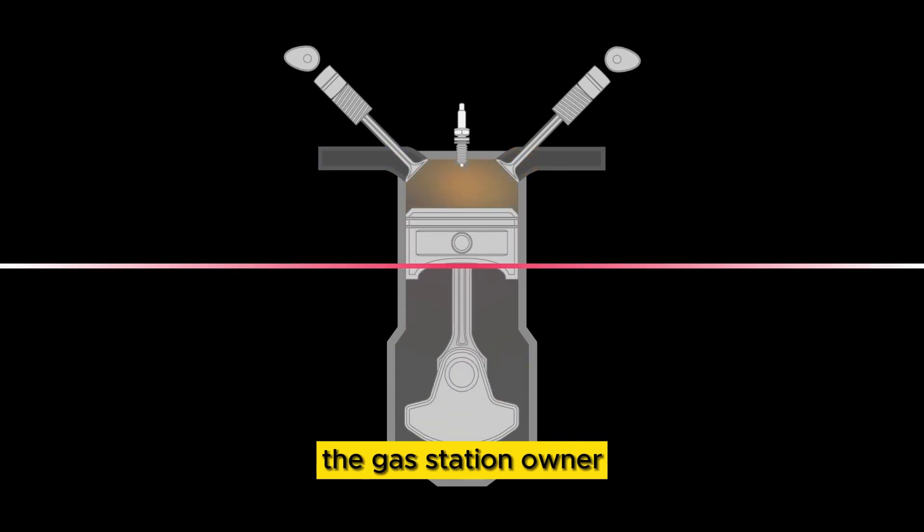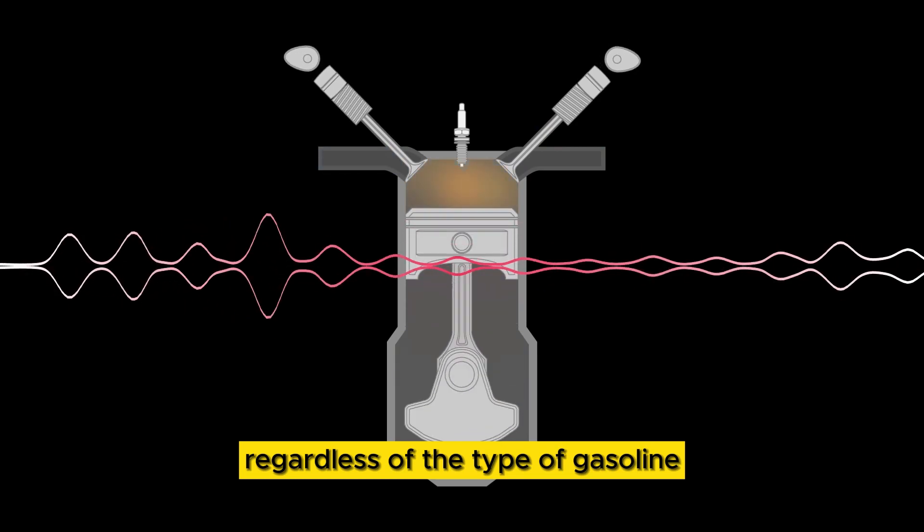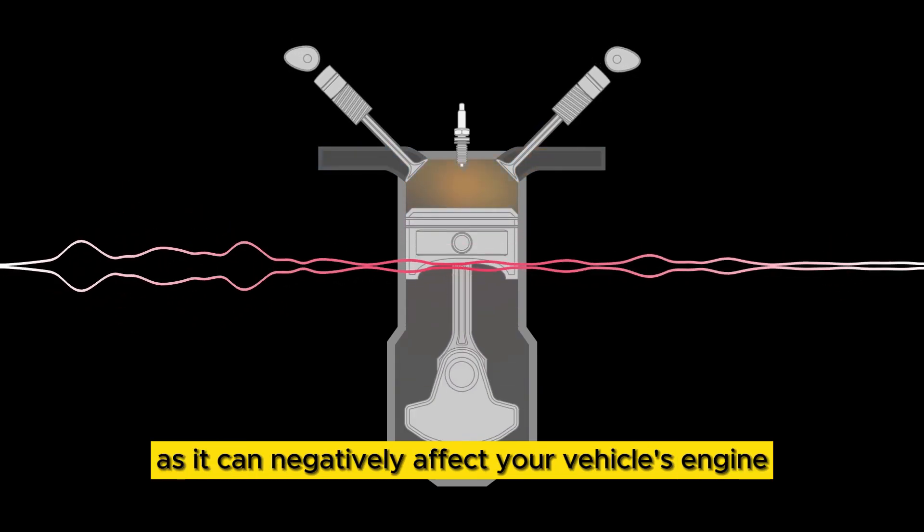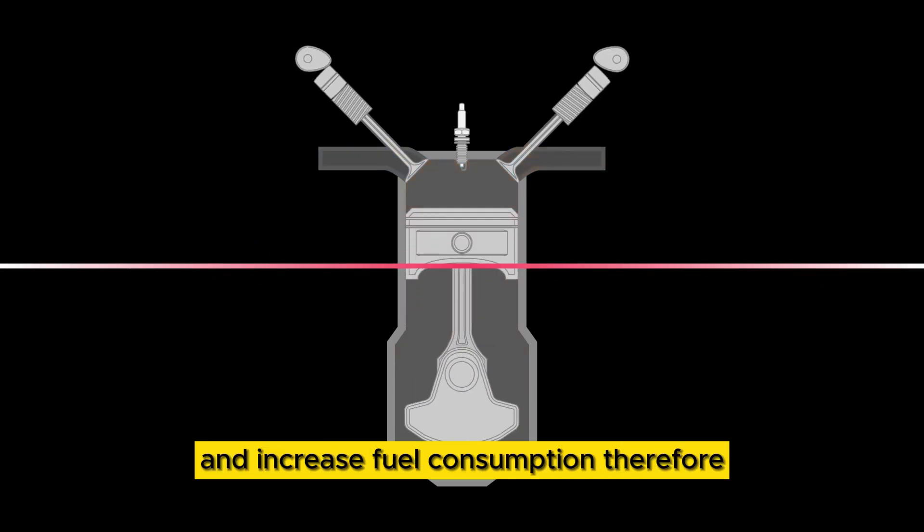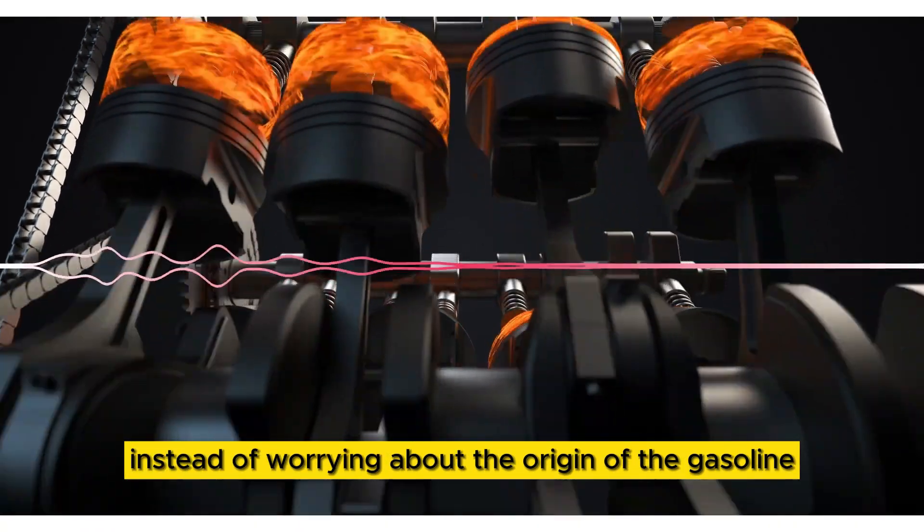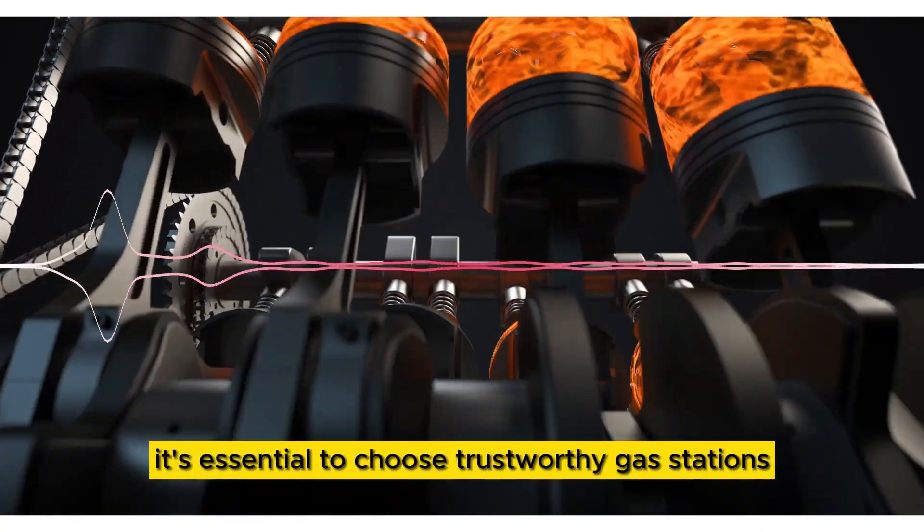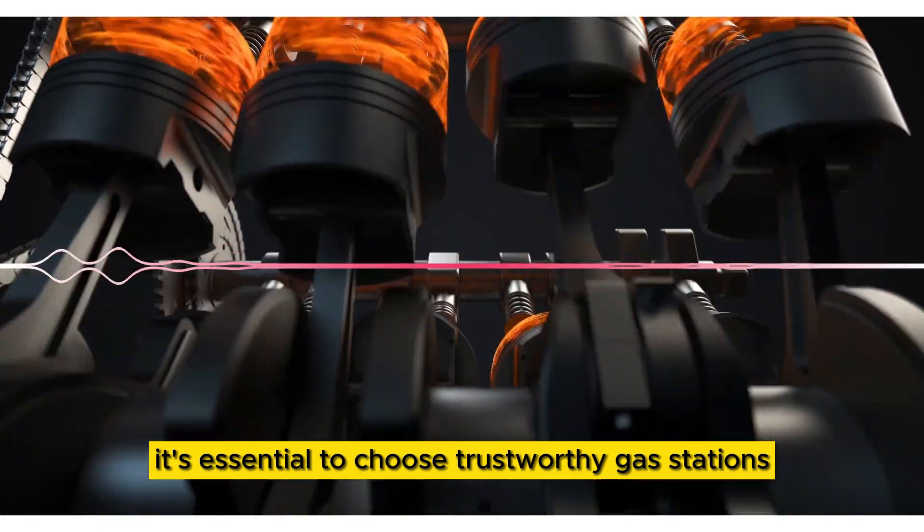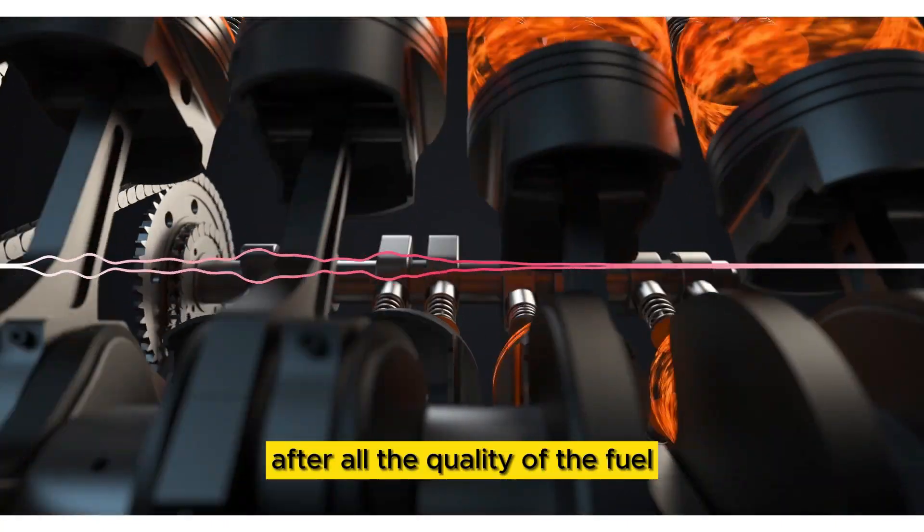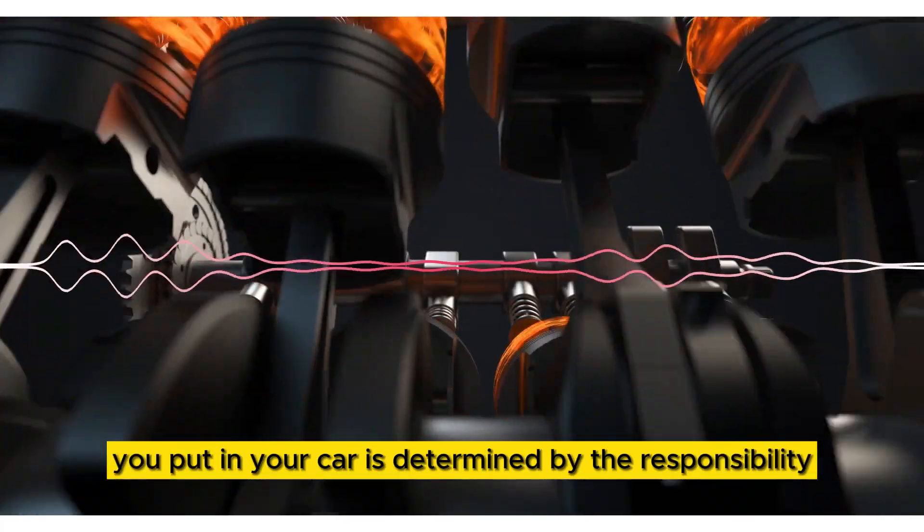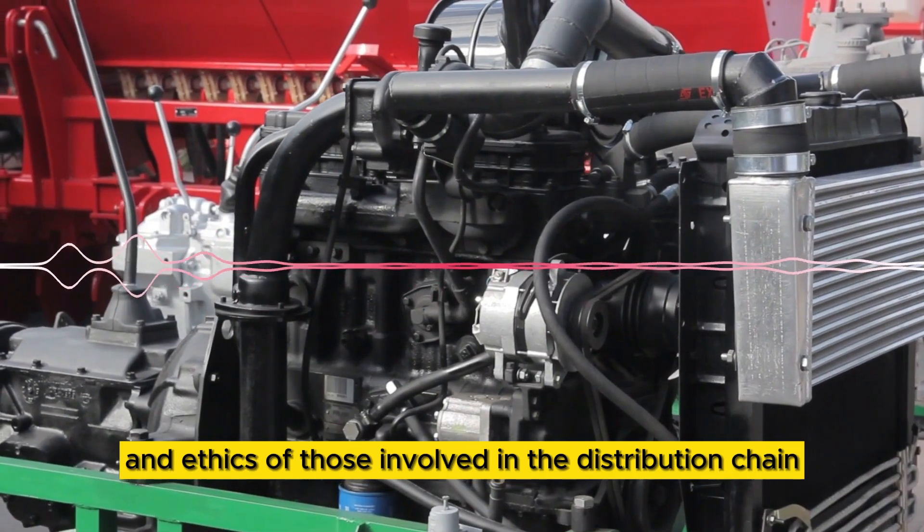Adulteration is detrimental regardless of the type of gasoline, as it can negatively affect your vehicle's engine, reduce performance and increase fuel consumption. Therefore, instead of worrying about the origin of the gasoline, whether it's refined or formulated, it's essential to choose trustworthy gas stations where integrity and honesty are priorities. After all, the quality of the fuel you put in your car is determined by the responsibility and ethics of those involved in the distribution chain.